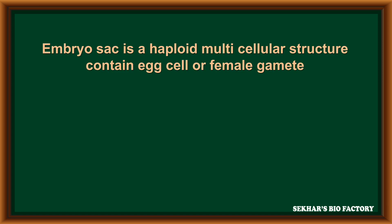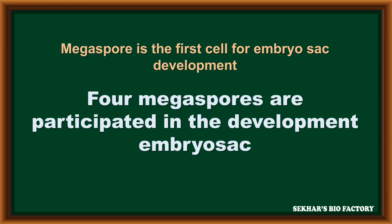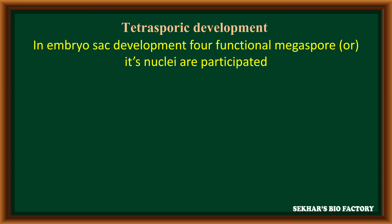The embryo sac is a haploid multicellular structure that contains the female gamete or egg cell for sexual reproduction. In tetrasporic embryo sac development, the four haploid megaspores produced from a diploid megaspore mother cell all act as functional megaspores. Megaspores are the first cells for embryo sac development. In tetrasporic embryo sac development, all four haploid functional megaspores and their nuclei participate to produce the complete structure of the embryo sac.